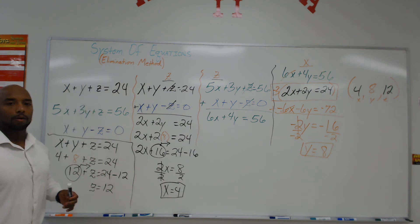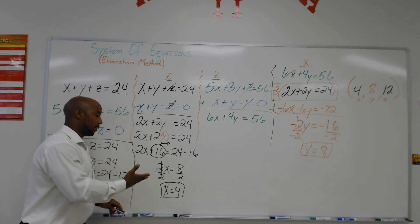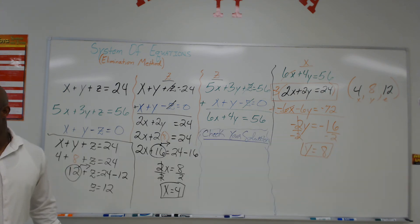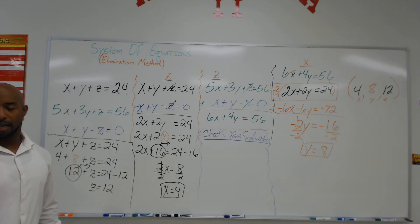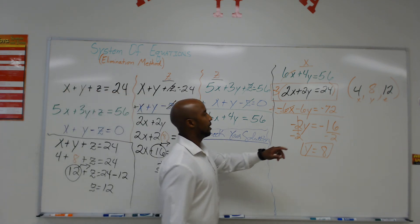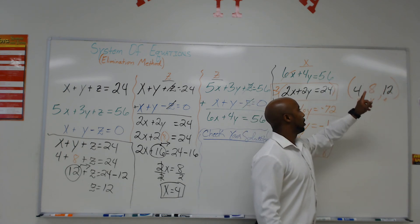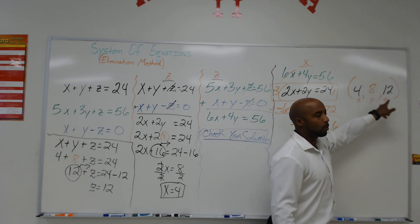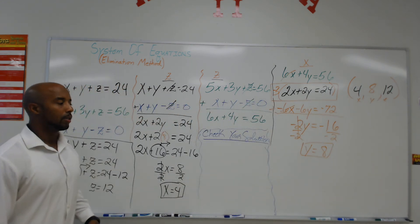Now I'm going to ask you to pause this video and jot this information down. If you have any burning questions, please feel free to bring them to your instructor for further understanding. At the conclusion of this video, I will show you how to check your answer to see if you are correct. Now it is time to check your solution. Our solution in this case is (4, 8, 12), where 4 is the value for x, 8 is the value for y, and 12 is the value for z.